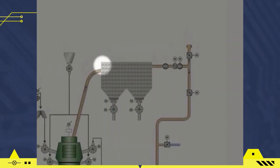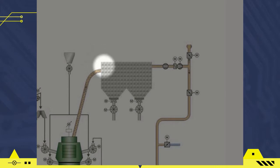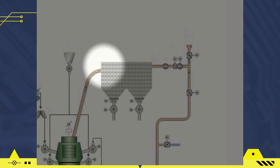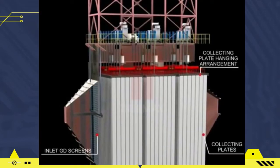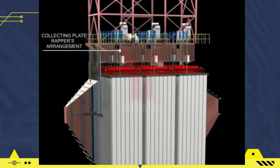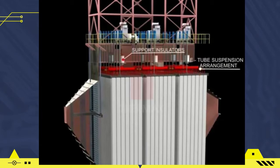The dust collecting system is a tool that functions to capture product material from the milling process. There are two types of dust collecting systems, including the ESP or Electrostatic Precipitator and the Filter Bag House. The ESP or Electrostatic Precipitator is an electrical-based dust catcher that uses electric voltage and current to capture product dust from the milling process.